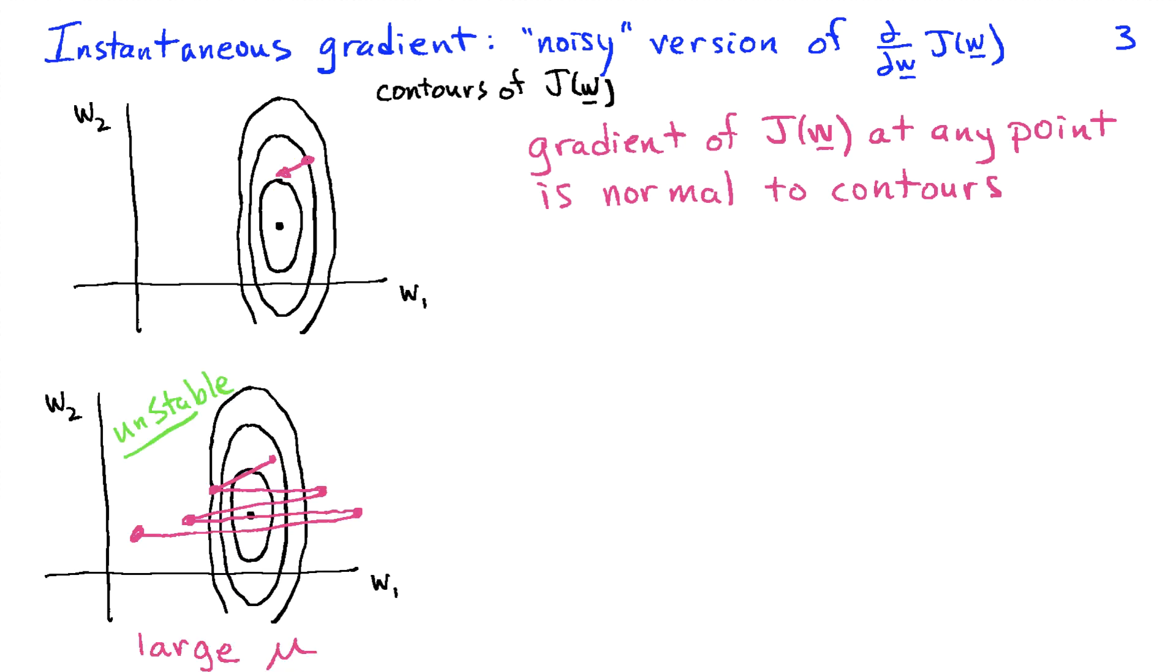We can think about taking steps in the gradient direction. Clearly, what happens depends on how big mu is. I've started off here with a case where mu is relatively large, so we start at some point, we take a big step, end up higher on the cost function than we were when we started. And that leads us to take an even bigger step, which drives us further up the cost function. You can see that this is just going to climb higher and higher up the sides of the bowl and is an unstable situation.